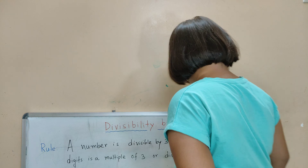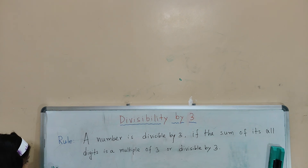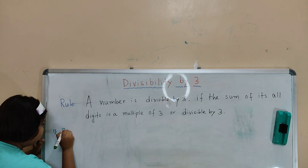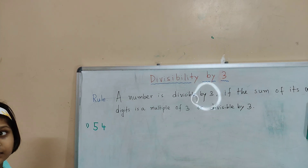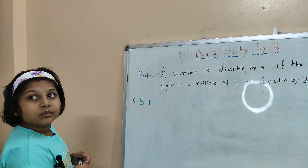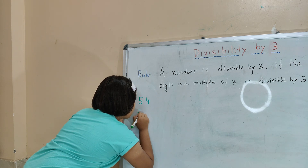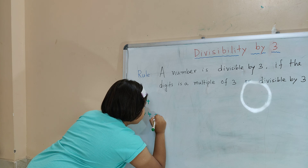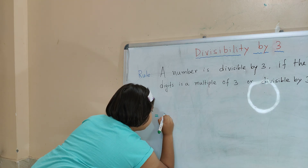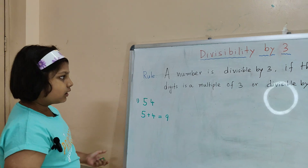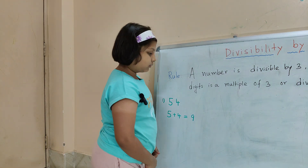Write 54. So find the sum of the digits. Sum of the digits means you have to find the sum of 5 plus 4. 5 plus 4 equals 9. So is 9 divisible by 3? Yes, mamma. 9 is divisible by 3, right?